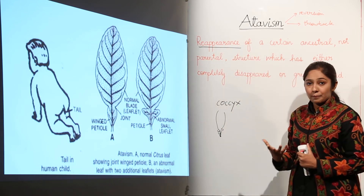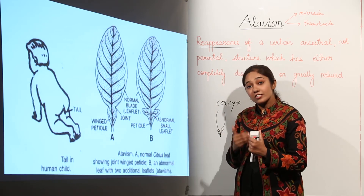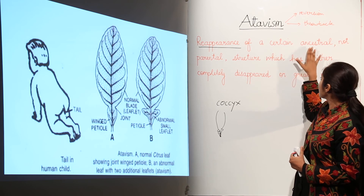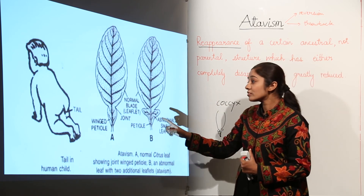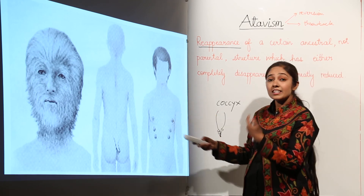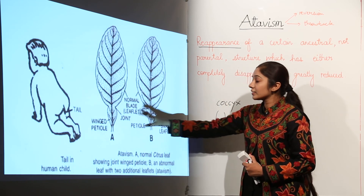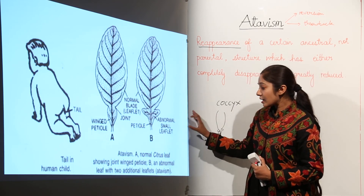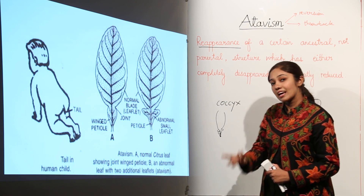So what does atavism convey in the evidences of evolution? It conveys that organisms have a tendency to develop ancestral characters during evolution which were lost. Atavism is the reappearance of certain ancestral, not parental, structure which has either completely disappeared or greatly reduced. Examples in humans include the tailbone, extra pairs of mammae, and development of extra facial hair. In plants, the citrus leaf — once thought to be trifoliate — sometimes develops an abnormal small leaflet, which is an example of atavism in plants.